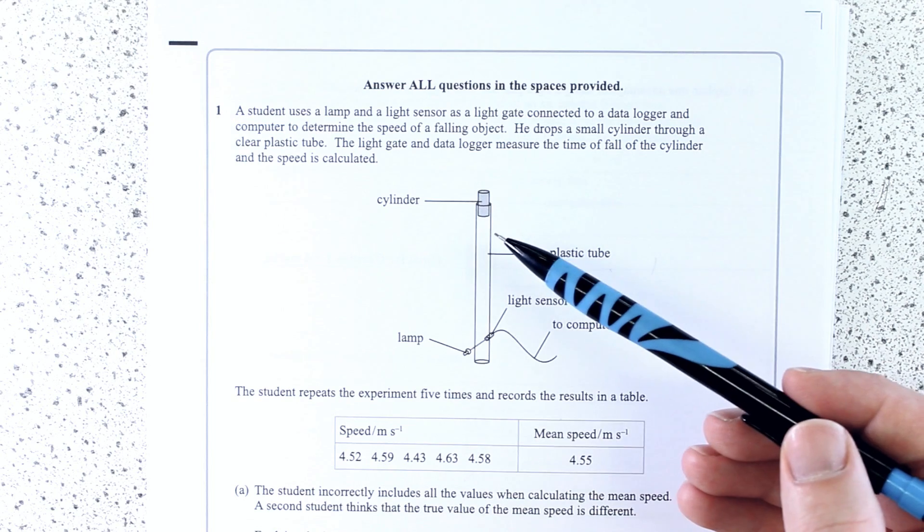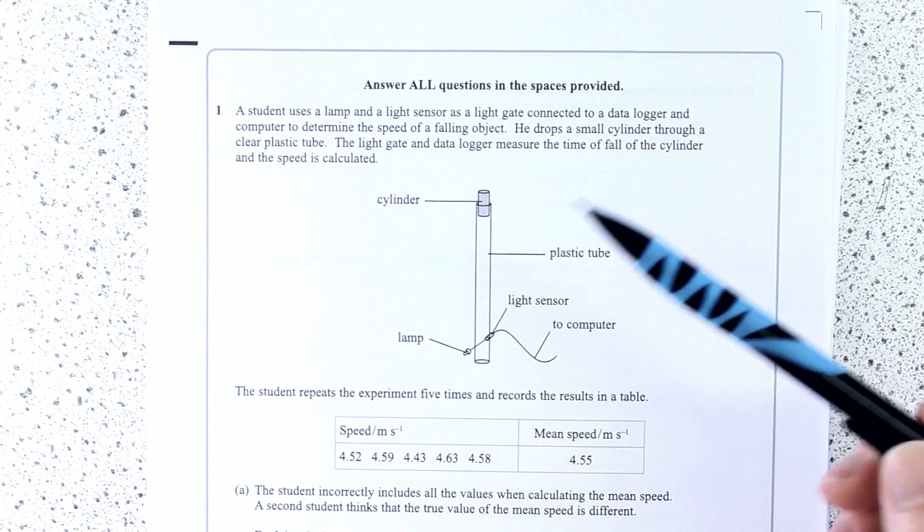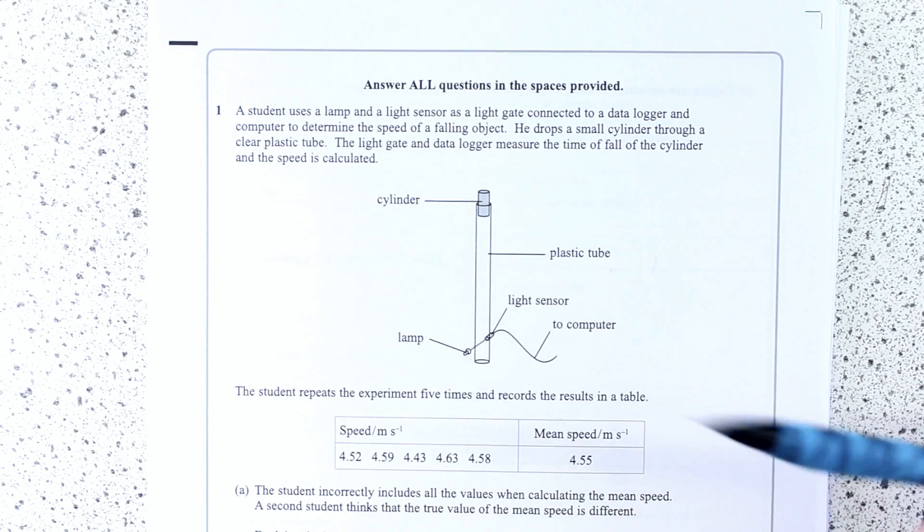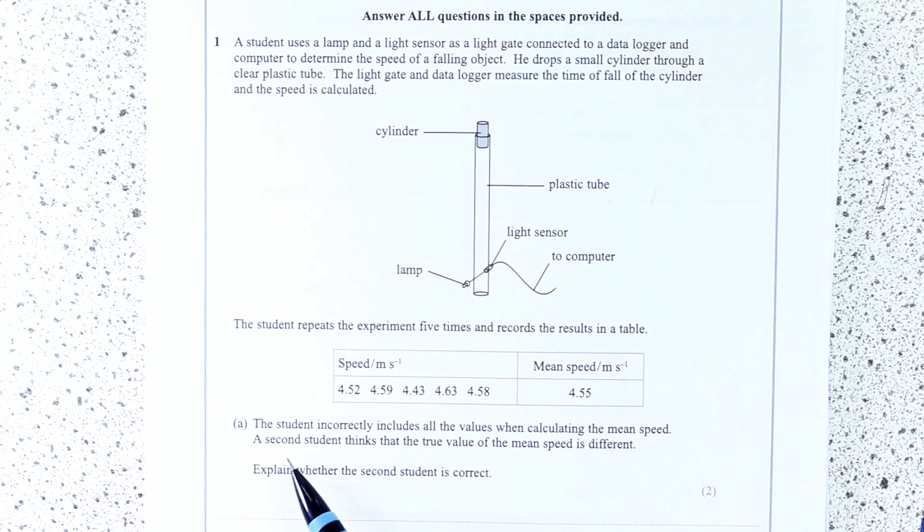This is about the core practical to do with measuring gravitational acceleration. So he's dropping an object through a clear plastic tube. Repeats experiment five times for his records of results. That's what you'd probably expect.